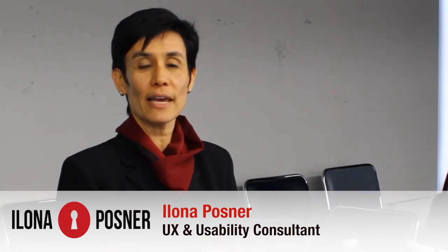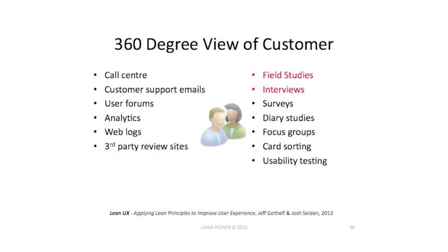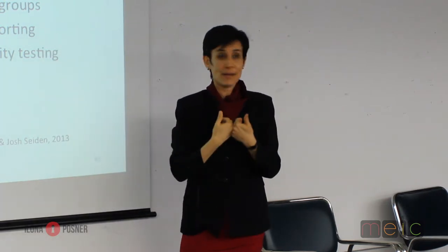Here's a list of different ways of getting your user research. On the left hand side you have things which are sort of out there already — you probably have a call center, customer support emails, forums, analytics which you should be running on your websites and product logs, and reviews. Those are things out there in the world that exist for most products, and you can use them to your advantage.